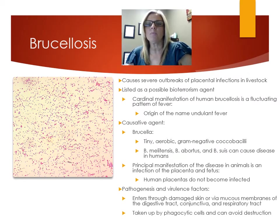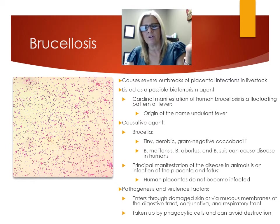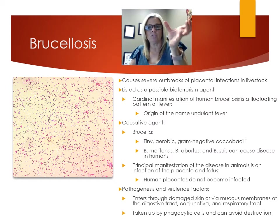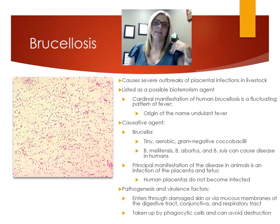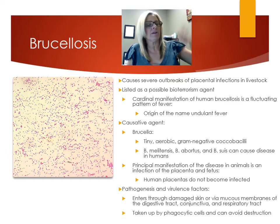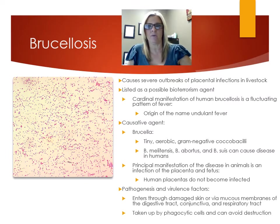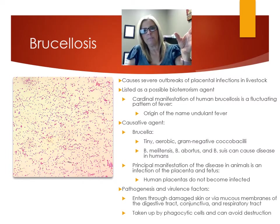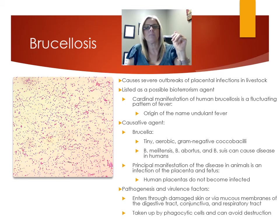Brucella enters through the skin or mucous membranes of the digestive tract, conjunctiva, or respiratory tract. Phagocytic cells take it in, but it avoids being destroyed and is transported through the bloodstream to other organs. The undulating fever pattern is related to the lipopolysaccharide in the bacterium. Spread occurs via direct contact, parenteral routes such as needlestick, or even airborne transmission. Treatment is doxycycline, gentamicin, or streptomycin.